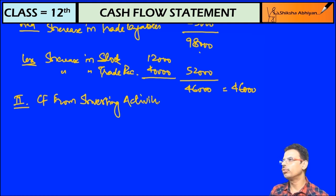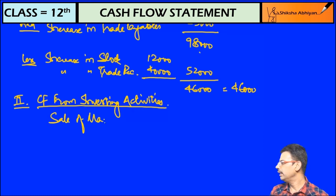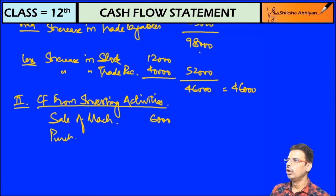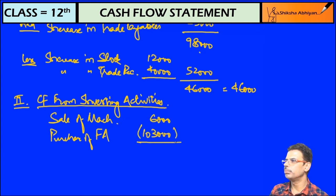Now cash flow from investing activities for fixed assets related. In fixed assets we have made an account. In fixed assets I have made a sale and a purchase as balancing figure. Sale of machinery 6,000. The purchase of fixed assets was a balancing figure, that was 103,000. Because it is a purchase, we are putting it in negative. So the net figure is 97,000 negative cash flow from investing activities.